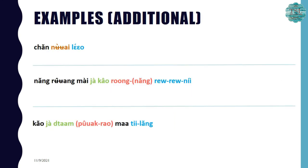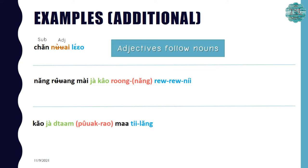Let's look at example sentences for แล้ว, เร็วๆนี้, and ทีหลัง. The first is an example for แล้ว. The sentence is ฉันเหนื่อยแล้ว. ฉัน is the subject, เหนื่อย is an adjective meaning 'tired,' and แล้ว is the adverb describing the adjective. Don't forget that adjectives always follow nouns. So this sentence means 'I am tired already.'